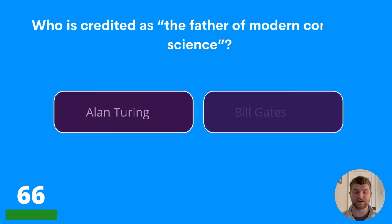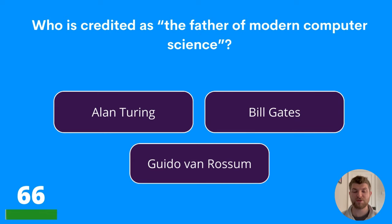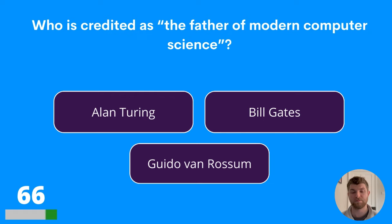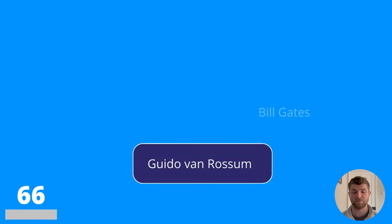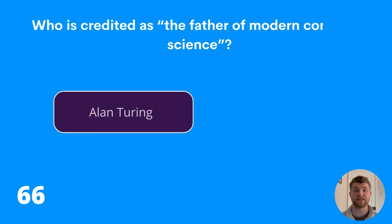Question sixty-six: who is credited as the father of modern computer science? Alan Turing, Bill Gates, or Guido van Rossum? The answer is Alan Turing.